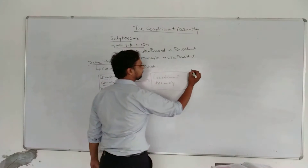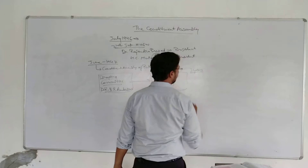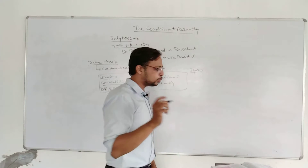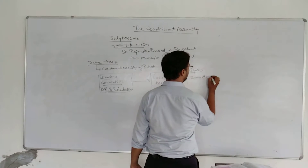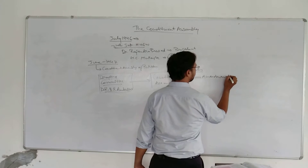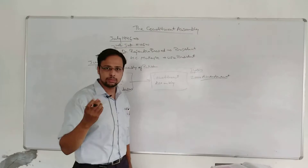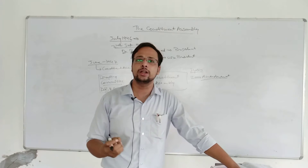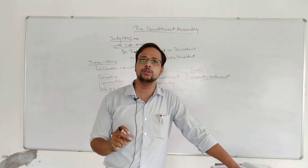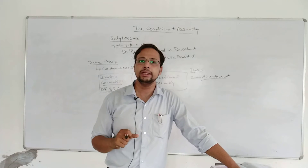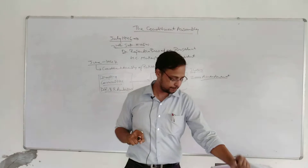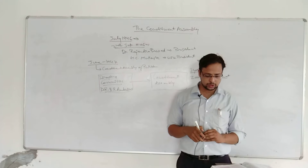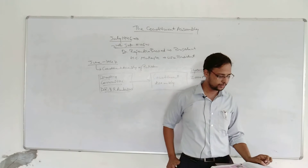Students, this was the constituent assembly and this draft was put through many rounds of discussion over three years. For three years discussions were held on different clauses, and more than 2000 amendments — meaning changes — were made in the draft of the constitution. Later the final constitution of the country was ready, and the date on which it was ready was 26th of November 1949. The deliberations have been recorded and preserved so as to give out the rationale of each clause inserted in the constitution.